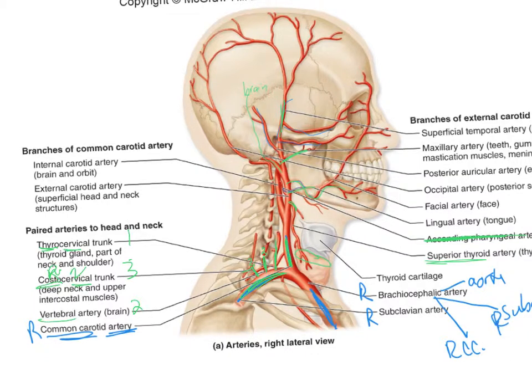And then the vertebral — remember in A&P1 you had to learn the vertebral foramen on the cervical vertebrae? It's a little hole that looks like you're piercing the ears of your transverse processes. That's right here, and that vertebral artery goes up through it along with the vertebral vein.